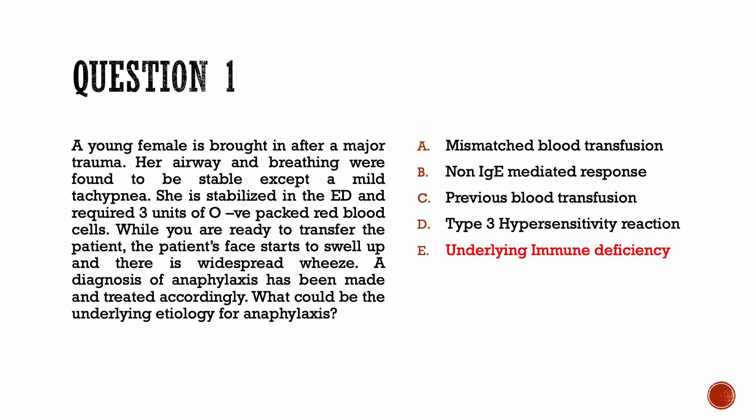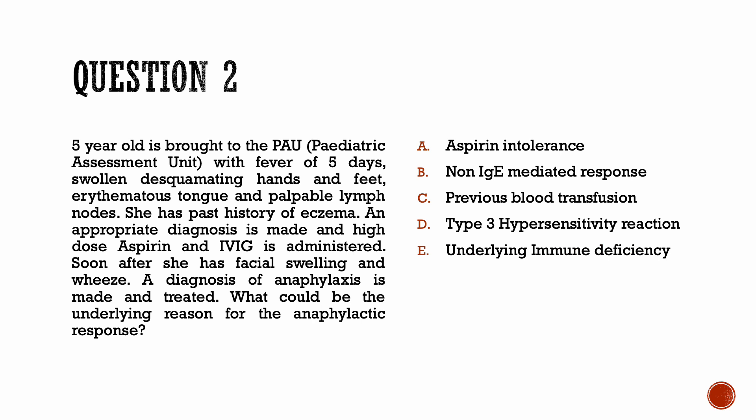Let's look at a similar question. A 5-year-old is brought to the pediatric assessment unit with fever of 5 days, swollen desquamating hands and feet, erythematous tongue, and palpable lymph nodes — this is Kawasaki disease. She has a past history of eczema. High-dose aspirin and IVIG is administered. Soon after, she develops facial swelling and hives, and a diagnosis of anaphylaxis is made and treated. The underlying reason for the anaphylactic response is underlying immune deficiency — anaphylaxis to IVIG.